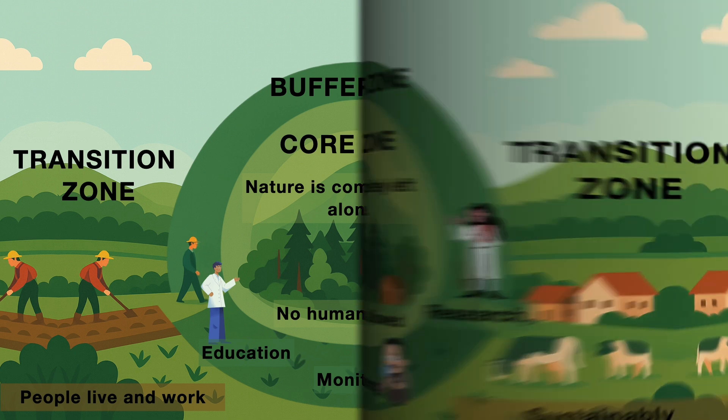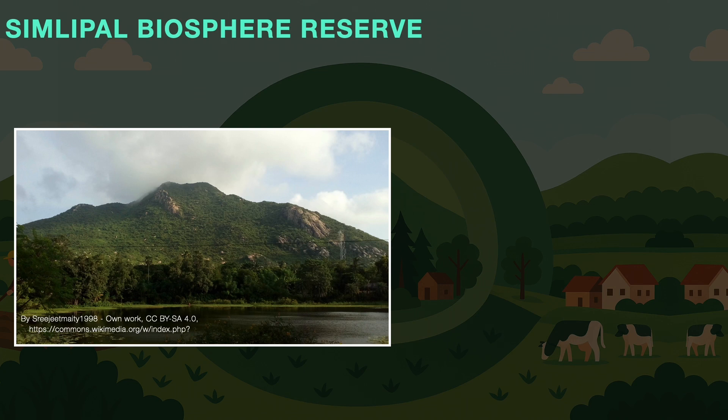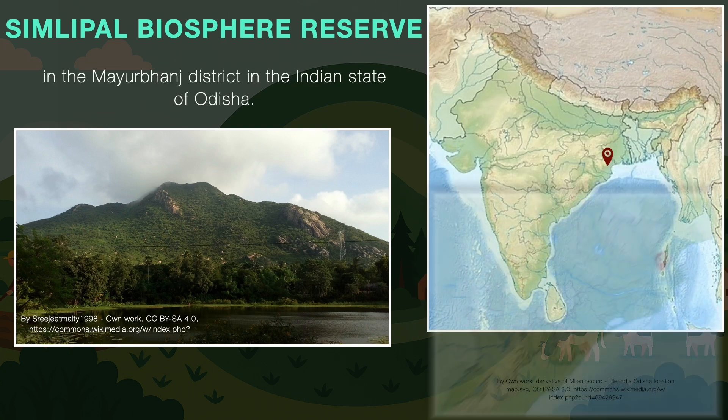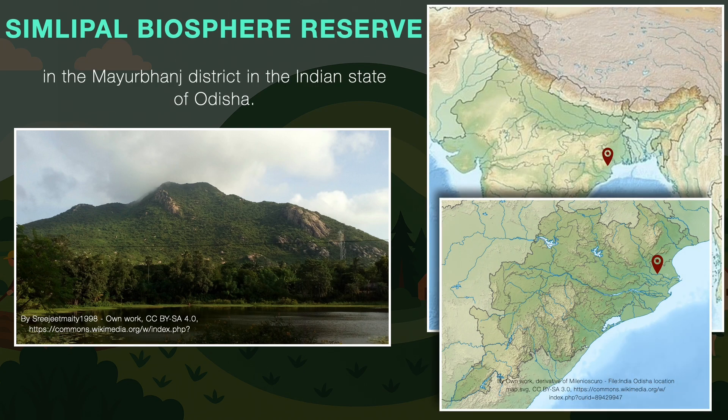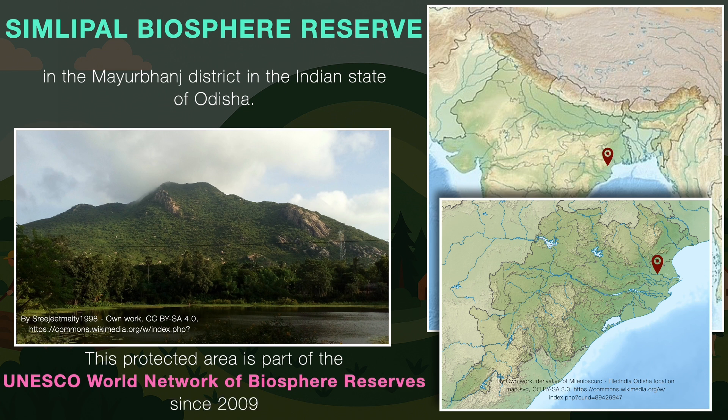One such biosphere reserve is the Simlipal Biosphere Reserve in Mayurbhanj district in the Indian state of Odisha. This protected area has been part of the UNESCO World Network of Biosphere Reserves since 2009. It is home to a large number of species of plants and animals, and it is also a tiger reserve, meaning the plants and animals here are conserved and protected.